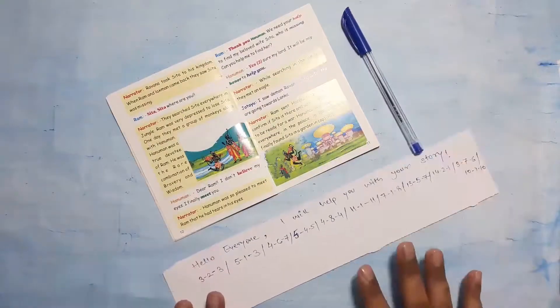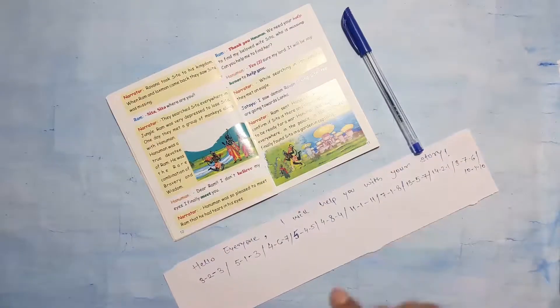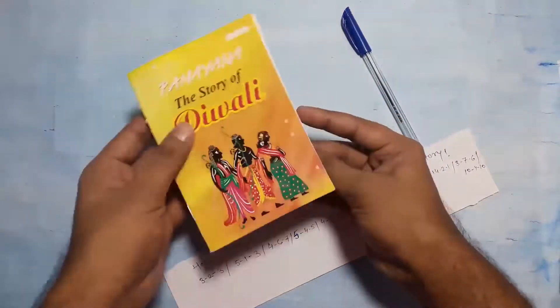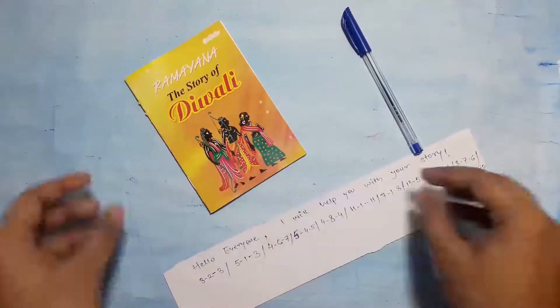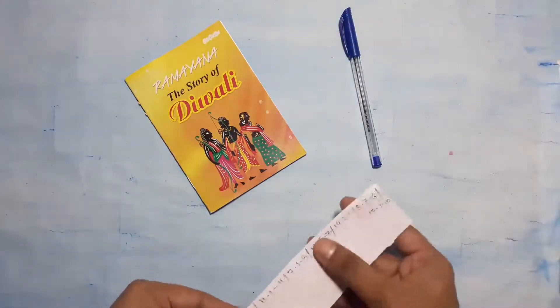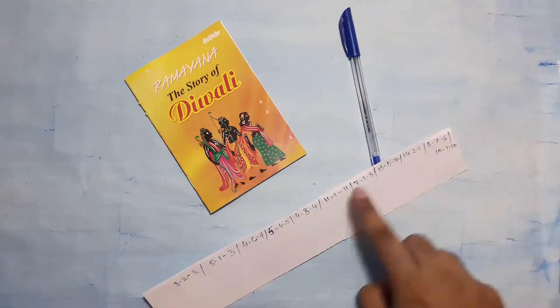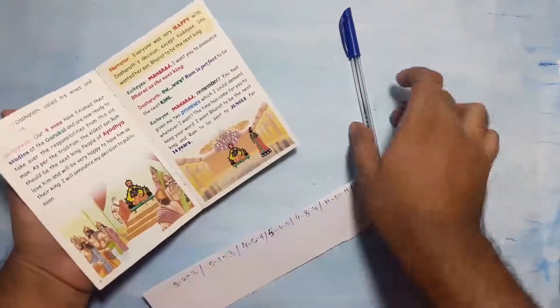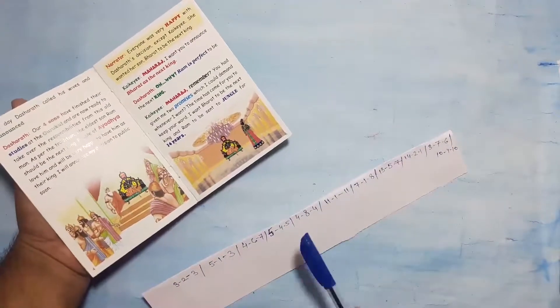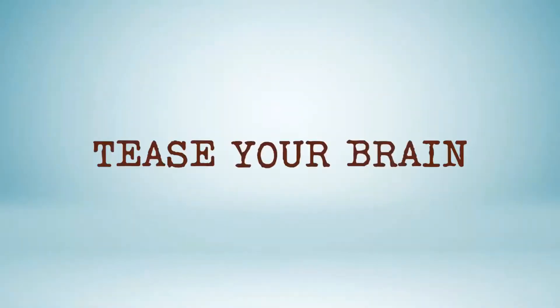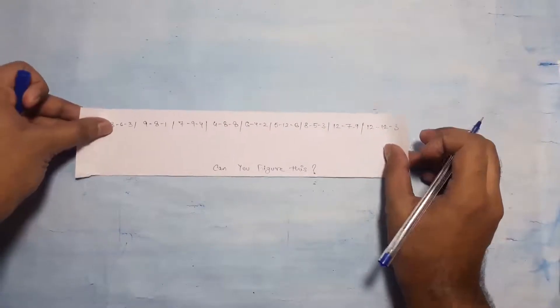And to represent the numbers, we'll use a slash. So here, all you need to figure it out is this book. If you give this code to anyone and give them this book, they'll be able to figure out what it means. Isn't this cool? So can you figure this out?